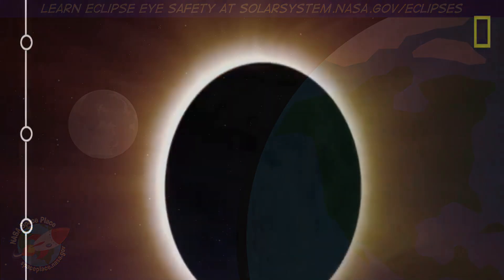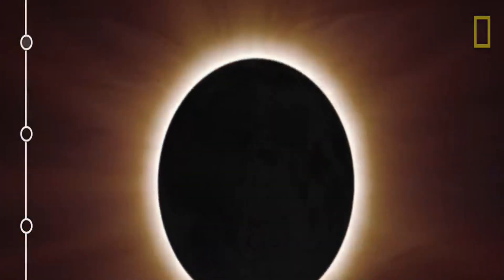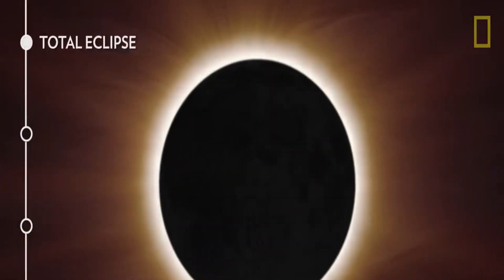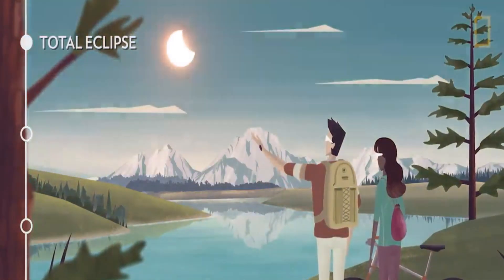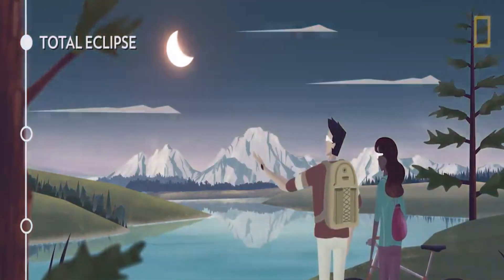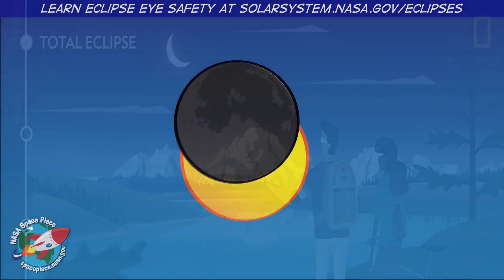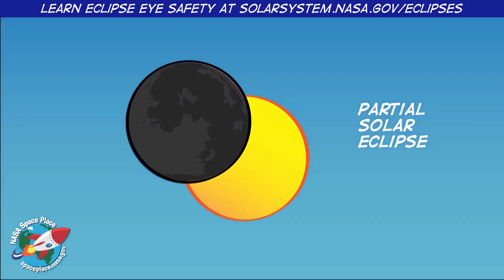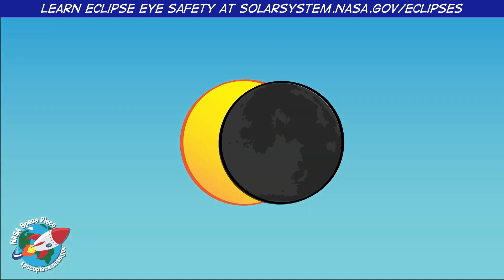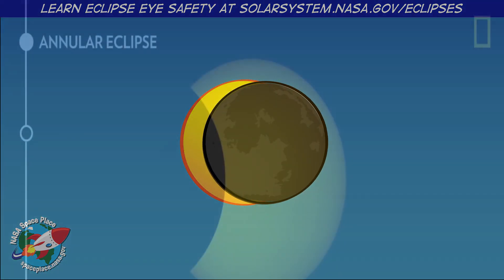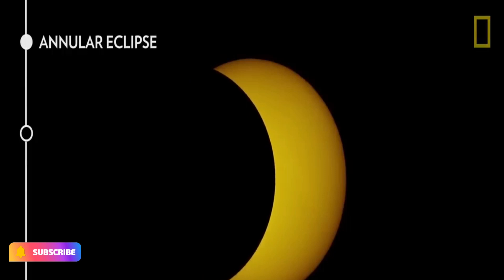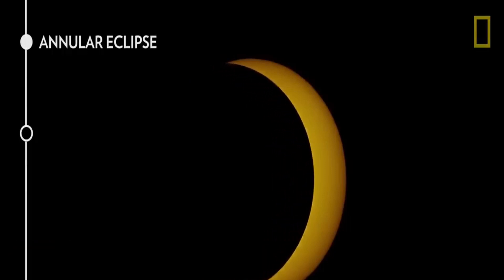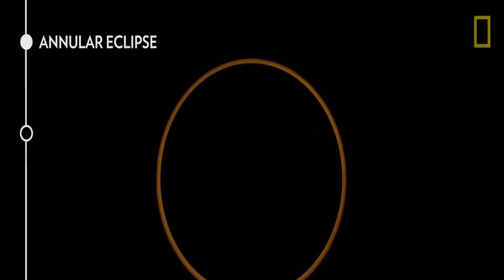Types of solar eclipses: Solar eclipses can be total, partial, or annular. A total solar eclipse occurs when the moon completely covers the sun, and the sun's corona is visible. A partial solar eclipse occurs when the moon partially covers the sun. An annular solar eclipse occurs when the moon is too far from the earth and its apparent size is smaller than the sun's, leaving a ring of sunlight visible around the moon.